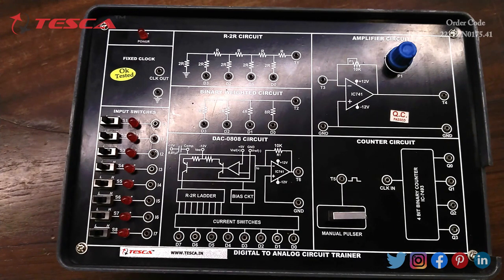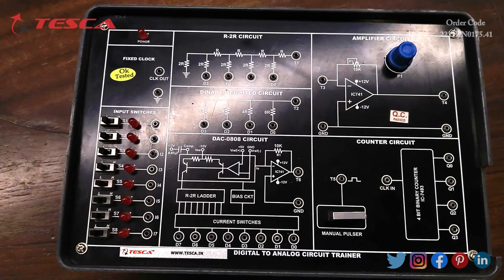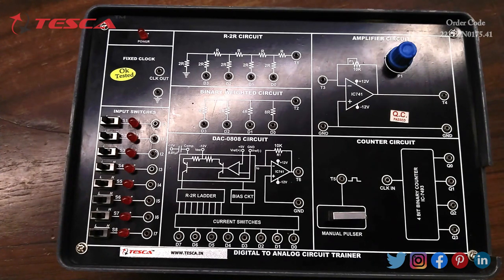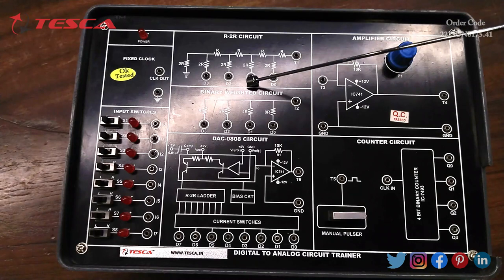This kit is divided into different blocks for benefit of users. The first block is R2R circuit. This is a circuit of combination of resistances. Input to this circuit is provided at D3, D2, D1, D0 and output is obtained through T1.